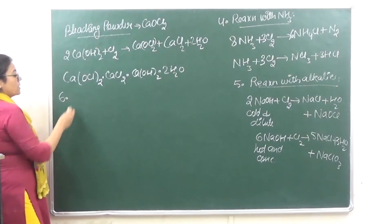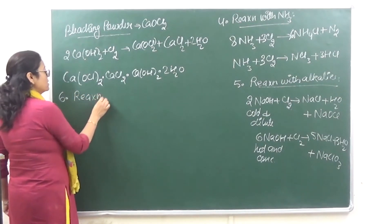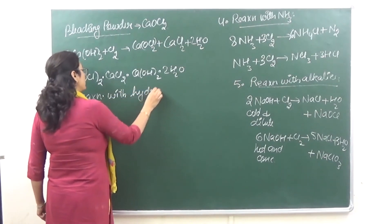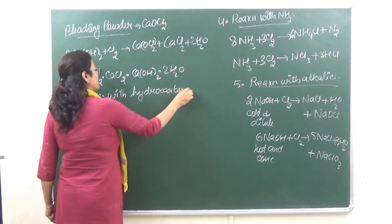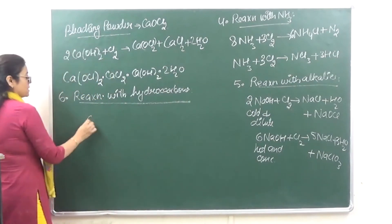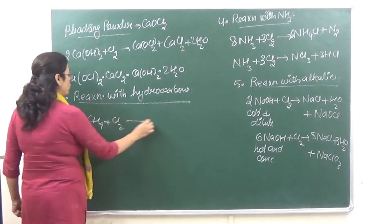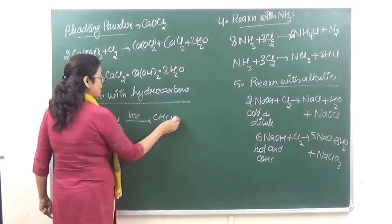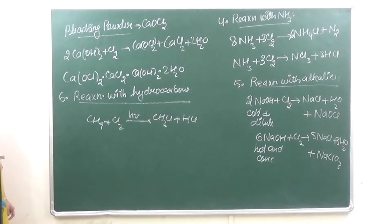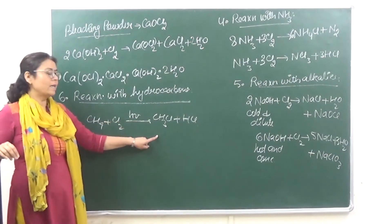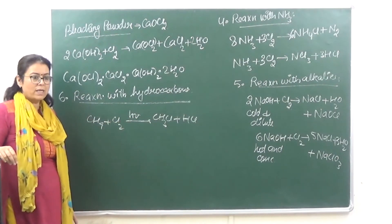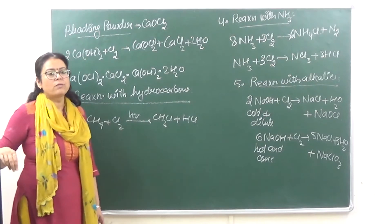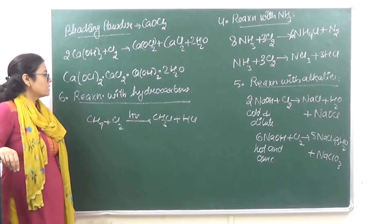Number six: Chlorine reacts with hydrocarbons readily in the presence of light — a free radical mechanism which you have also done in Class 11. CH4 plus Cl2 in the presence of hν gives CH3Cl plus HCl. This is a chain reaction. Further reaction gives CH2Cl2, then chloroform CHCl3, and then CCl4.